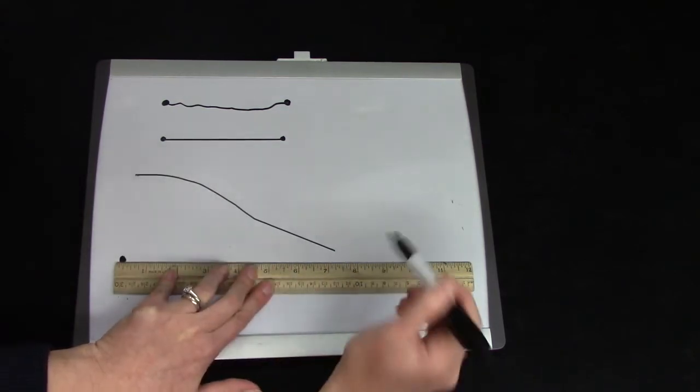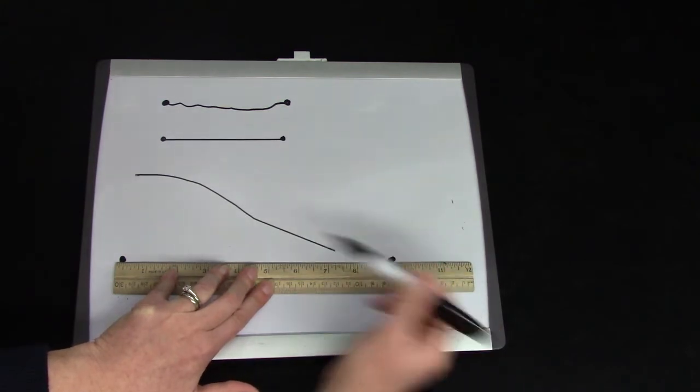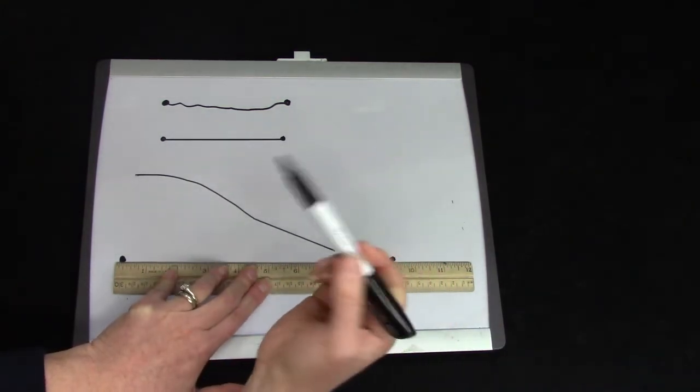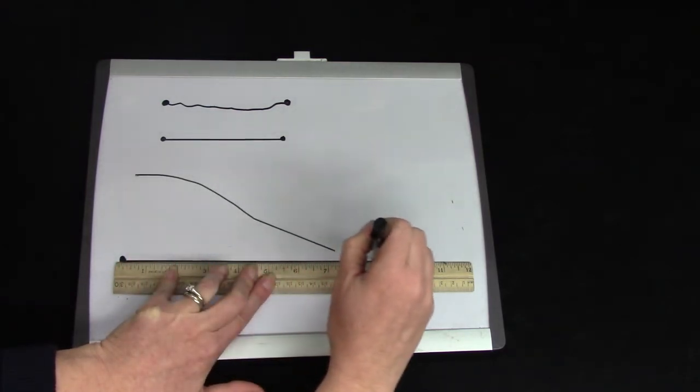Let's say I had a dot here and a dot here and I wanted to draw a line segment between those two dots. I would hold it tightly and start at one dot and go to the next dot.